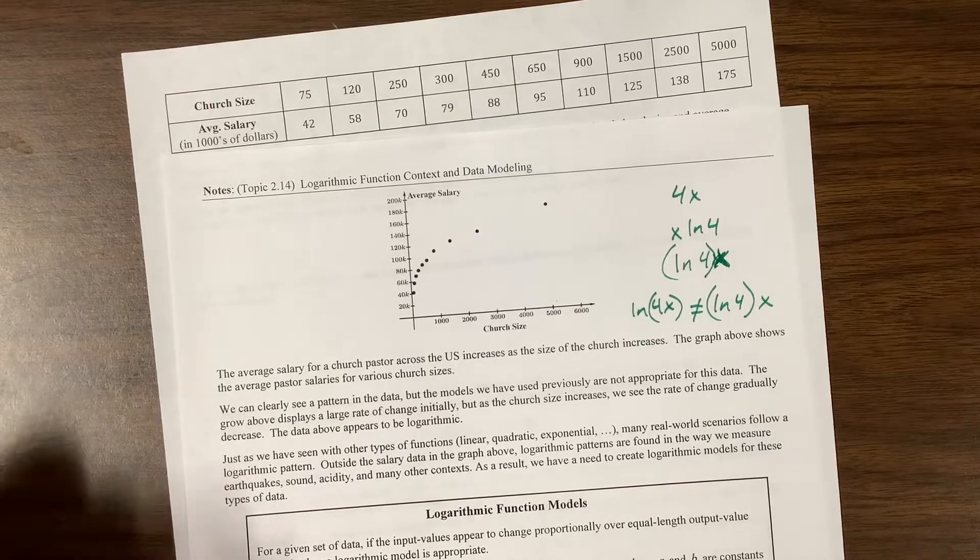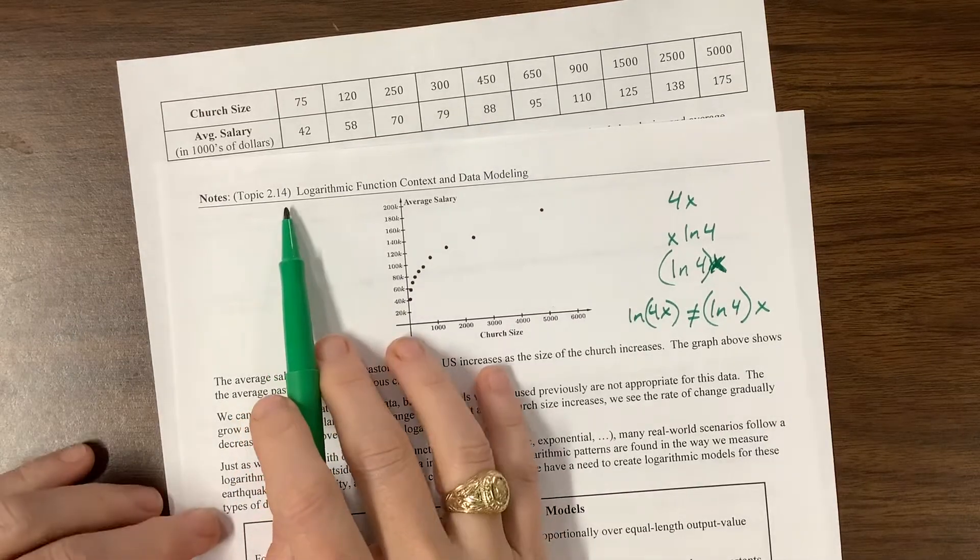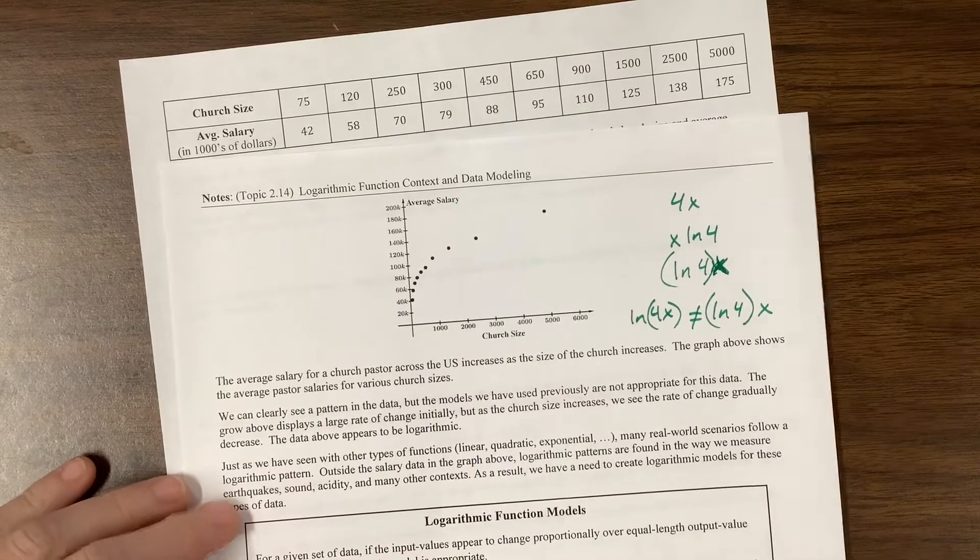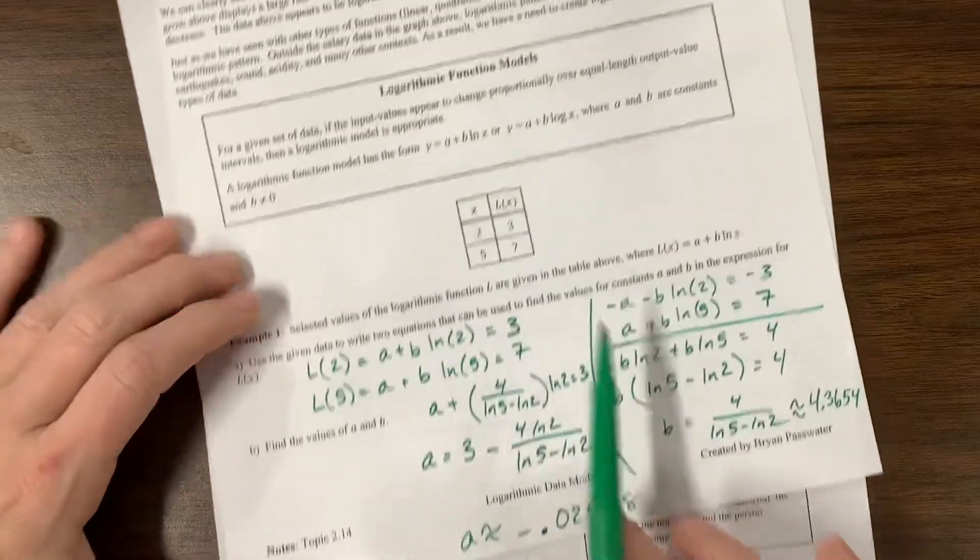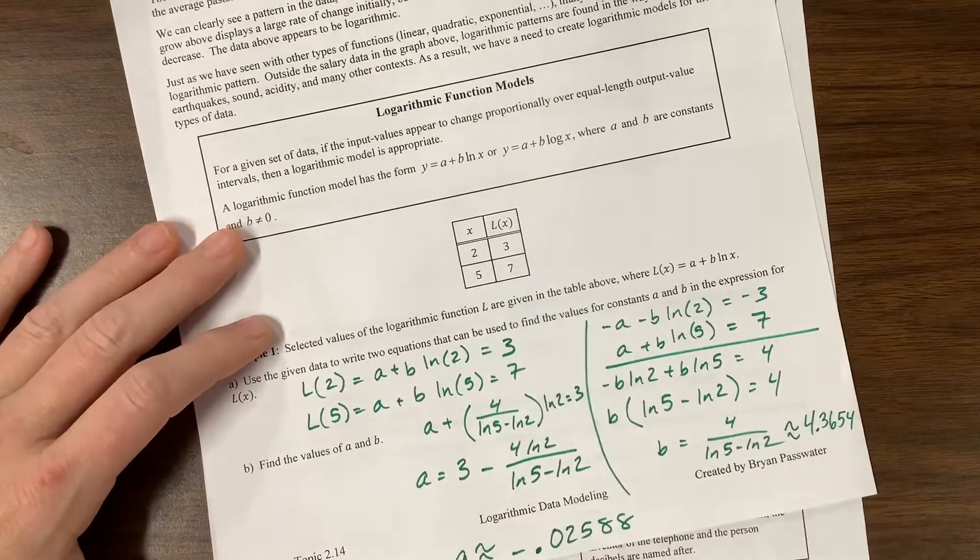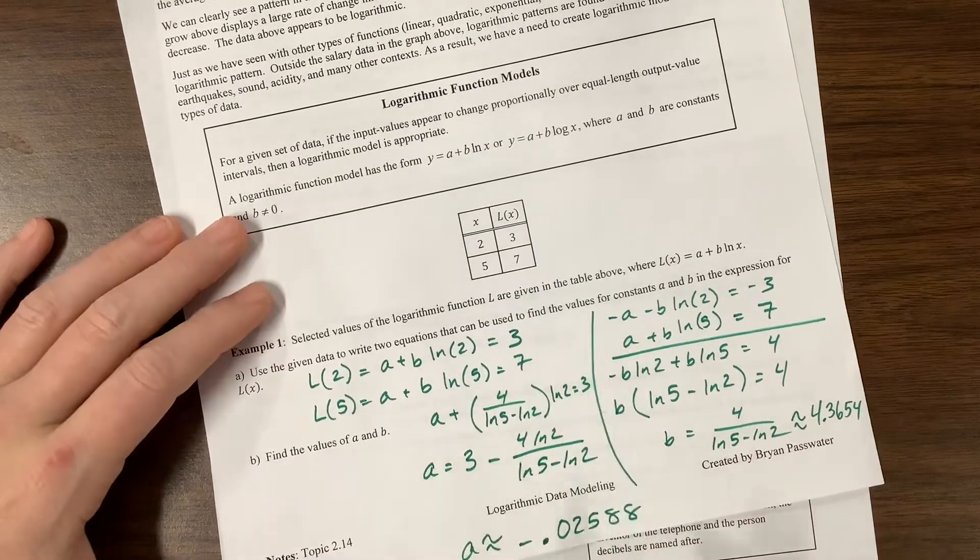Hi, it's Ms. Koch. I am continuing with topic 214, which is logarithmic function context and data modeling. In this previous one, we were using systems to solve for A and B. They'd given us an X and a Y value, well, two X and Y values, so we wrote a system of equations.